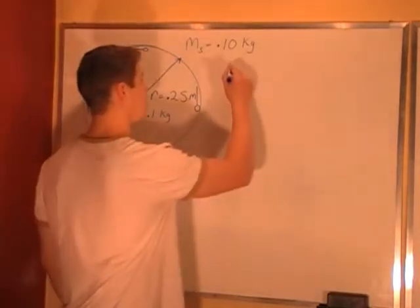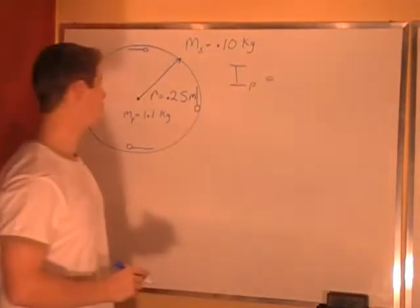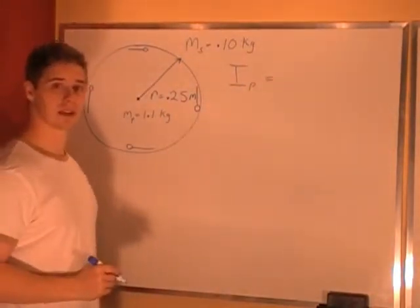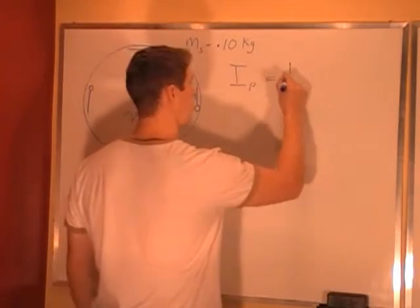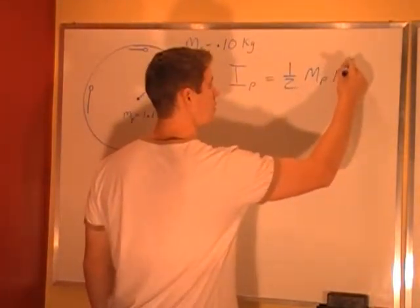For the platter, the moment of inertia for the platter is equal to 1/2 mass times the radius squared. Mass of the platter, radius squared.